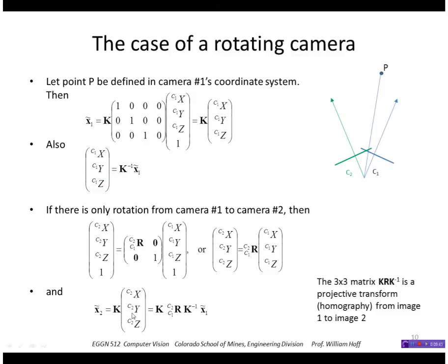Substituting for the point coordinates in camera 2, I get the rotation times the point coordinates in camera 1. And I know that the point coordinates in camera 1 is just K inverse times x1 wiggle. So what I've done is I've related an image position of a point in image 2 to the image position of the point in image 1 through this K R K inverse. So this K R K inverse is a 3x3 matrix and it's a projective transform or homography from image 1 to image 2.